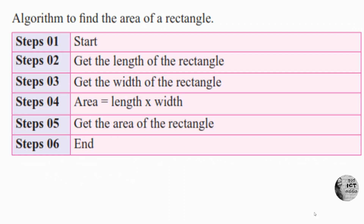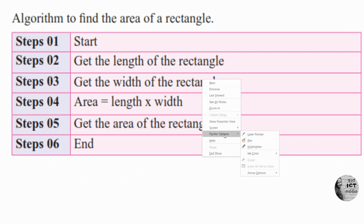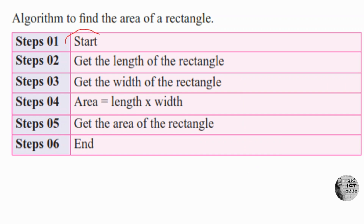Here is the algorithm to find the area of a rectangle. There should always be a start and end. Within the start and end, you write your inputs, output, and process. To find the area of the rectangle, we need the length and the width as inputs.